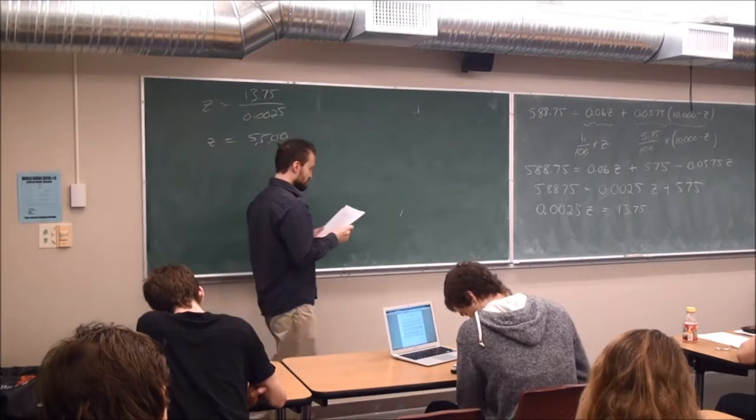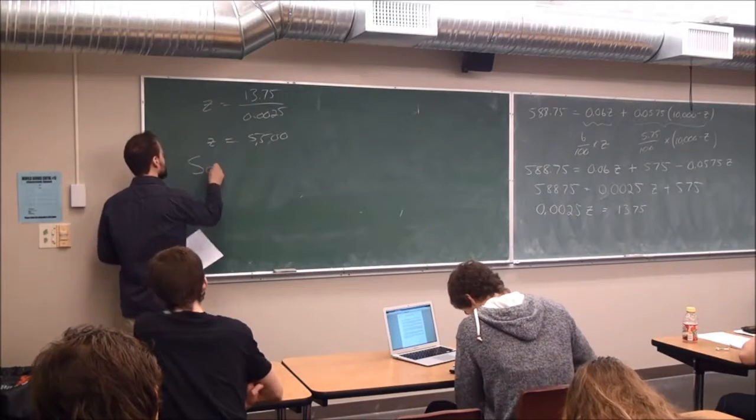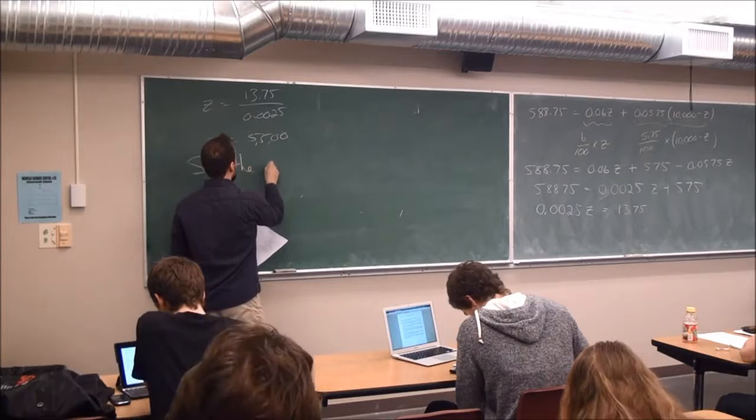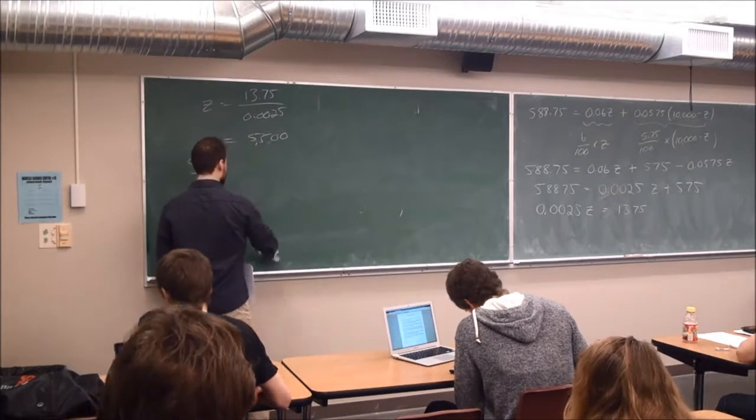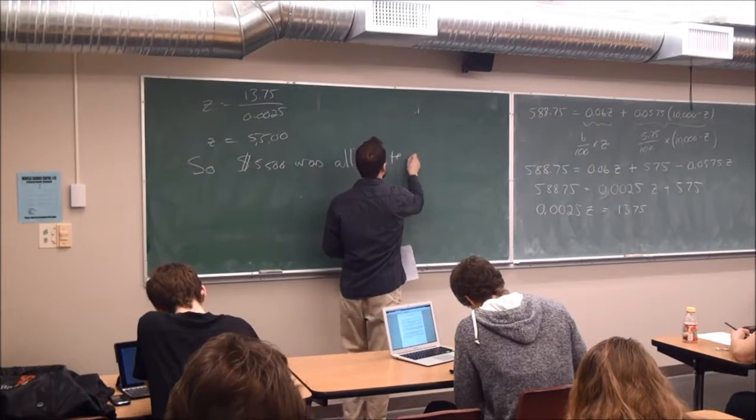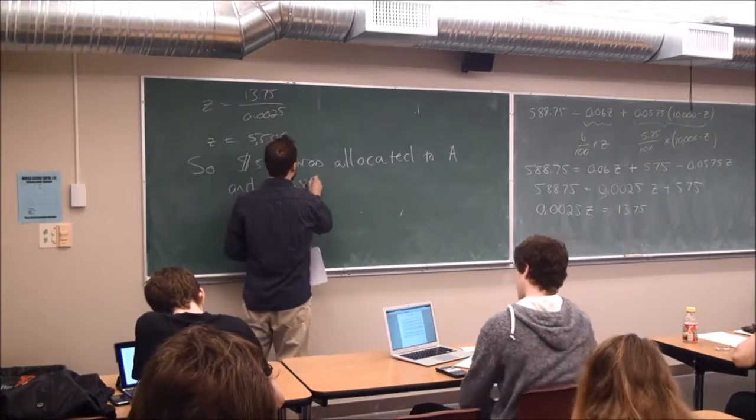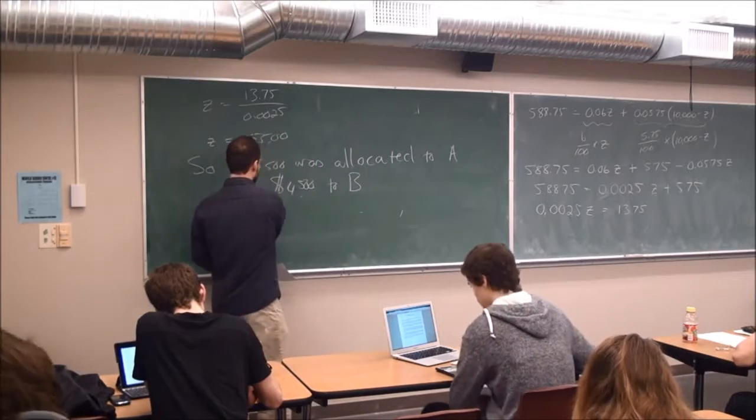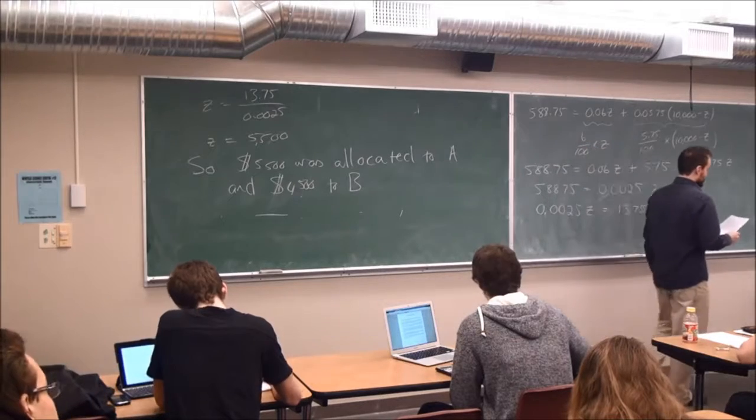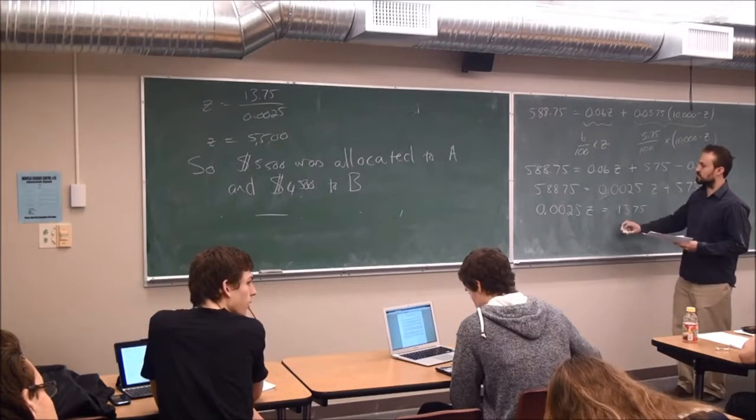Now remember, what was that representing again? The amount allocated to A. So in sentence, to just wrap things up, we can say that 5500 was allocated to investment A. And then obviously, 4,500 to B. So we'll quickly do number 6. But I don't want you to focus on number 6. Number 6 is different than these ones. These ones are actually what I'm focusing on.